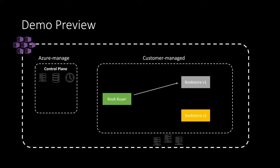The Book Buyer service will begin communicating to the Bookstore V1 service once deployed. We will then enable the AKS OSM add-on to the cluster, and it will default to allow permissive traffic mode, meaning no communication enforcement rules will be deployed by default. This is to ensure that your application continues to run as is with no interruptions. We will then onboard the Book Buyer and Bookstore namespaces for OSM to manage.